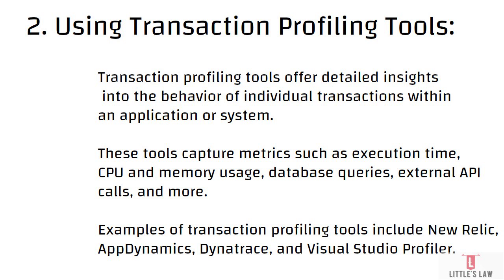New Relic also captures contextual information such as transaction attributes, HTTP parameters, user sessions, and custom attributes, which enriches the transaction trace data. After collecting all that data, we do spanning. Transaction tracing in New Relic spans across distributed components and services within your application architecture. When a transaction invokes downstream services or makes external calls, New Relic traces these interactions and aggregates the data into a single trace, allowing you to visualize the entire execution path including interactions with internal and external dependencies.